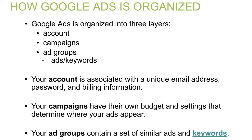In today's video we will be focusing on campaigns and ad groups. In Google Ads, campaigns have their own budget and settings that determine where your ads appear, and your ad groups contain a set of similar ads and keywords. To give you a better idea of how Google Ads is organized, we are going to take a closer look at these two layers on a Google Ads account.